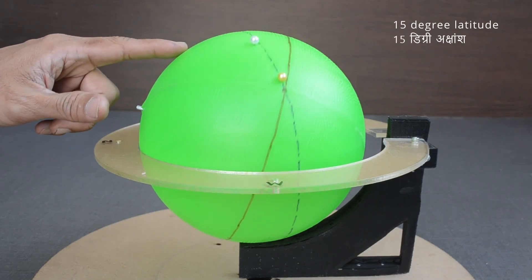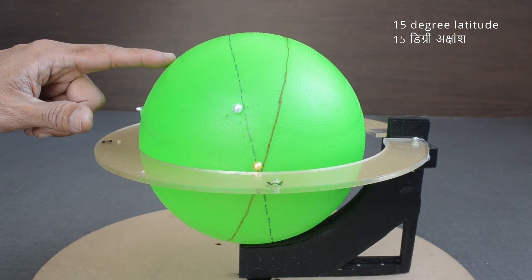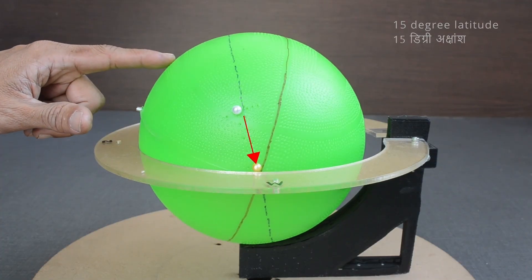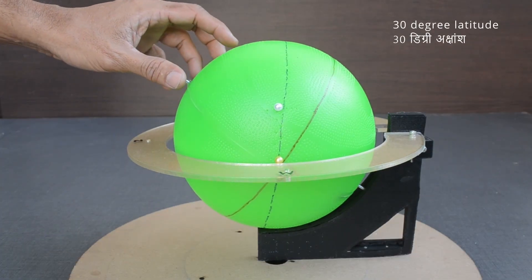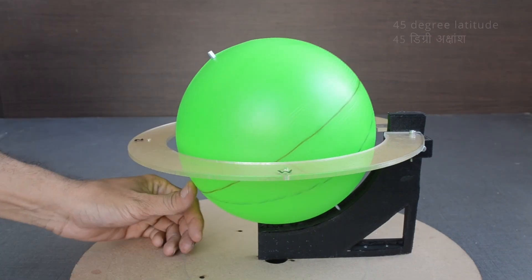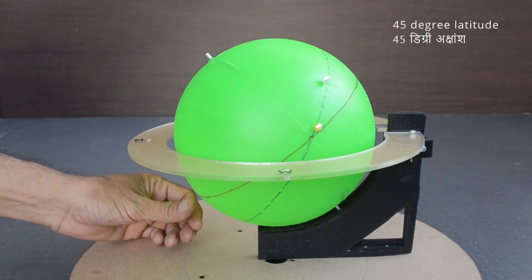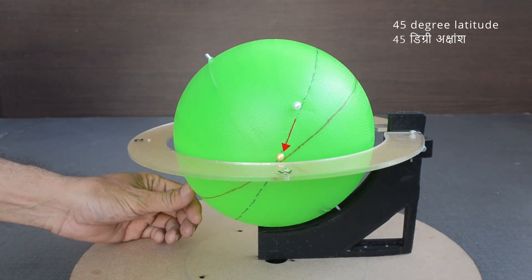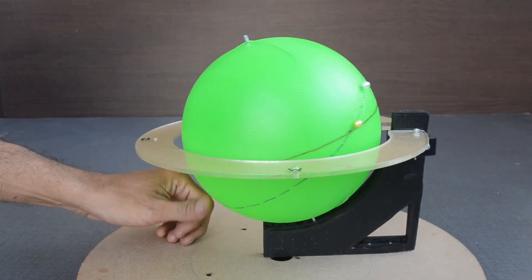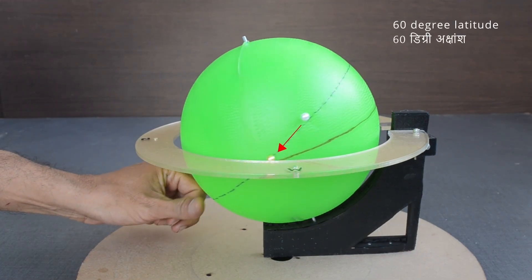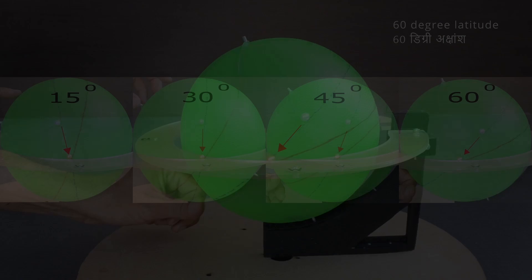Now, let us keep the same configuration and change the latitude for the observer. Closely observe the change in angle between the line joining the sun and moon and horizon, as we change the value for the latitude. Based on this angle, orientation of the crescent moon will change for the observer.